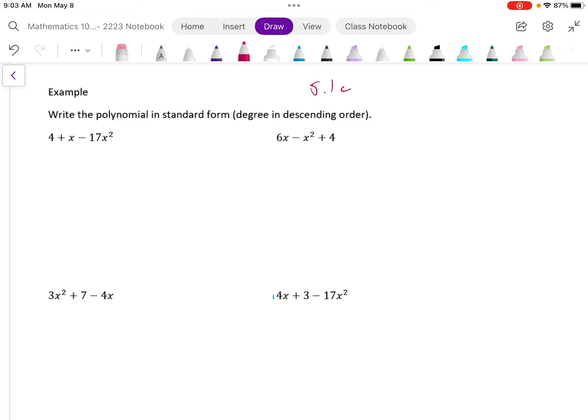We're going to write a polynomial in standard form where the degree is in descending order. That is, we have the highest degree to the left and as we work right, the degree or the exponents have to go down.